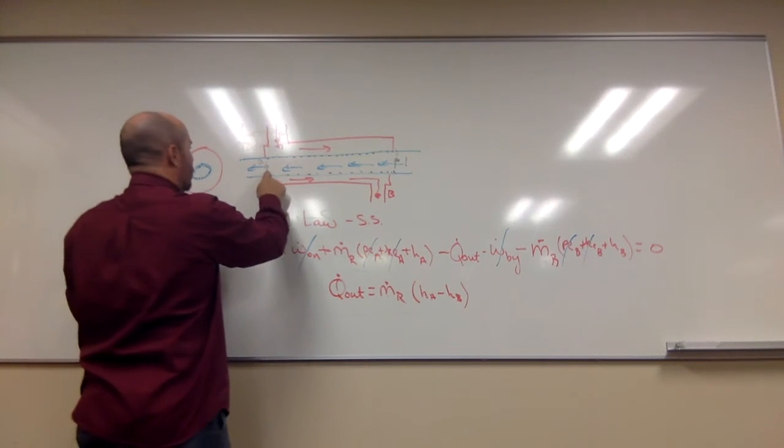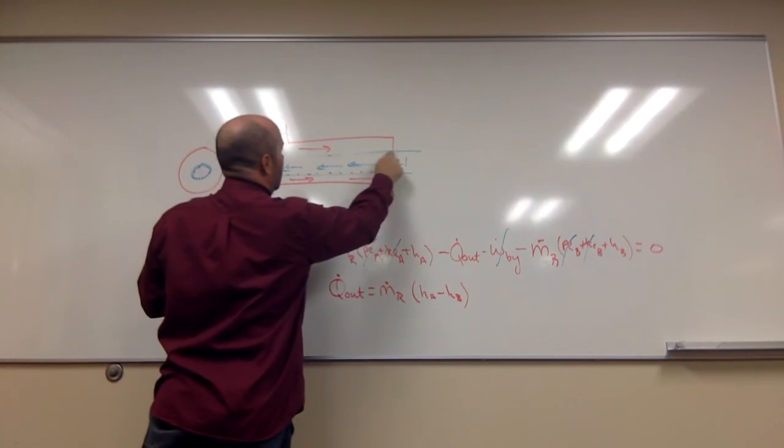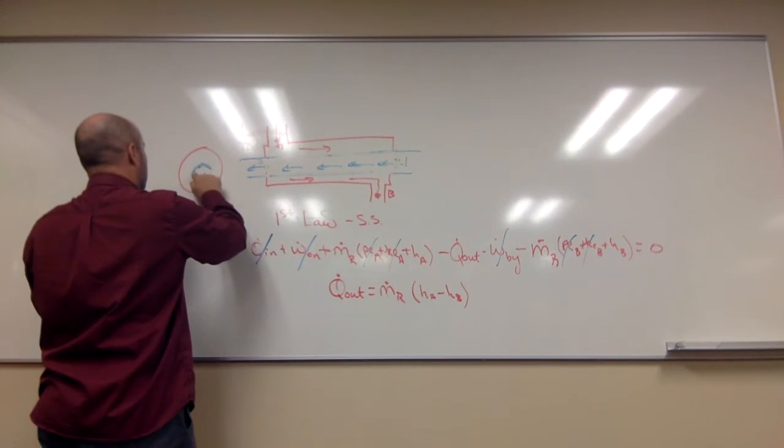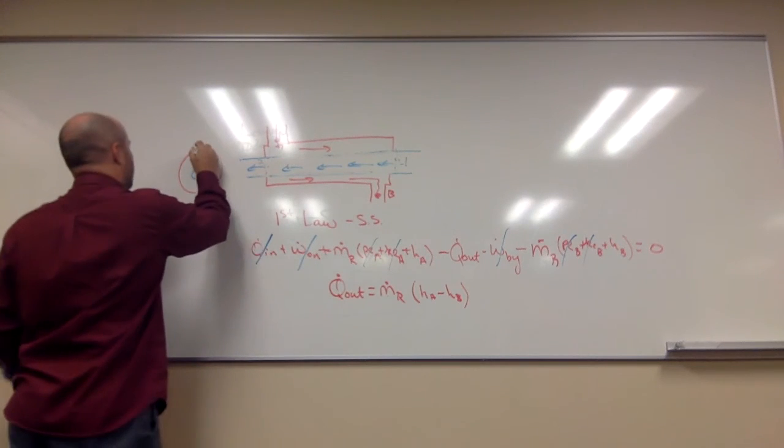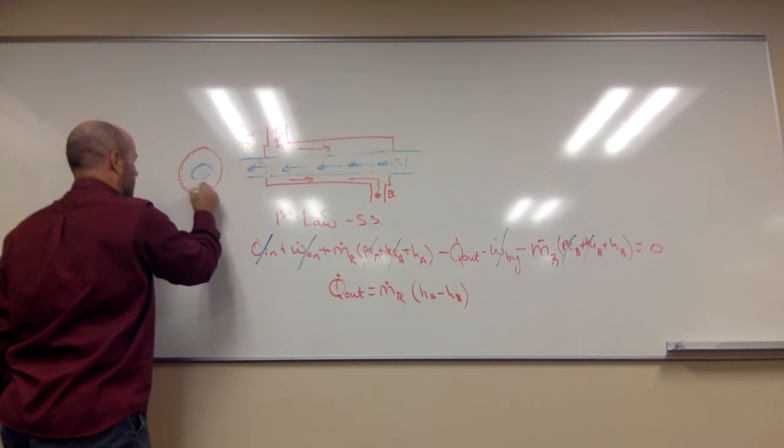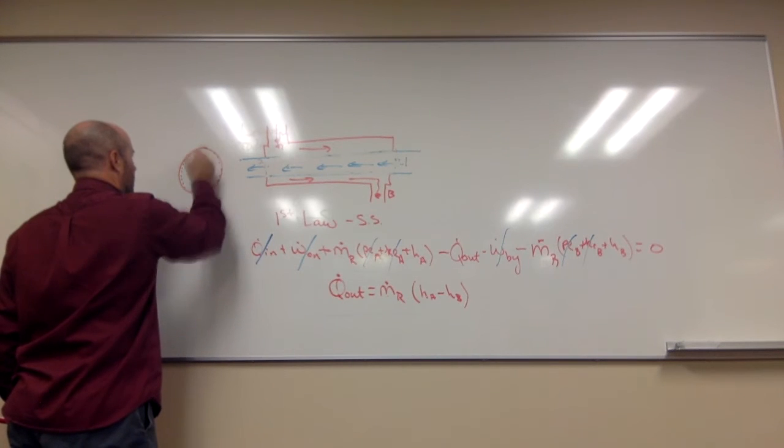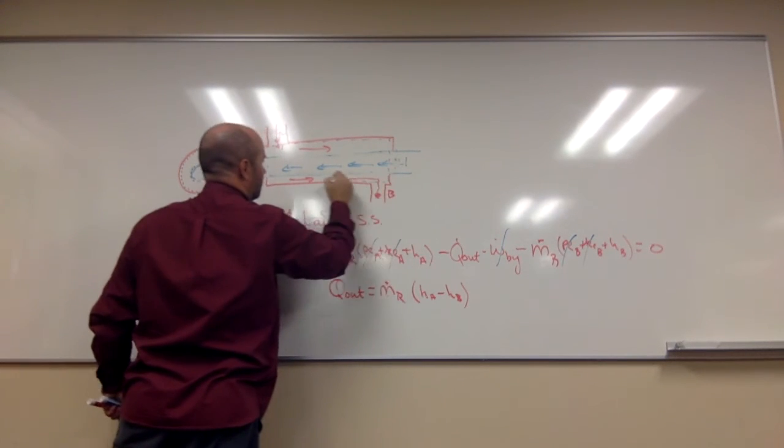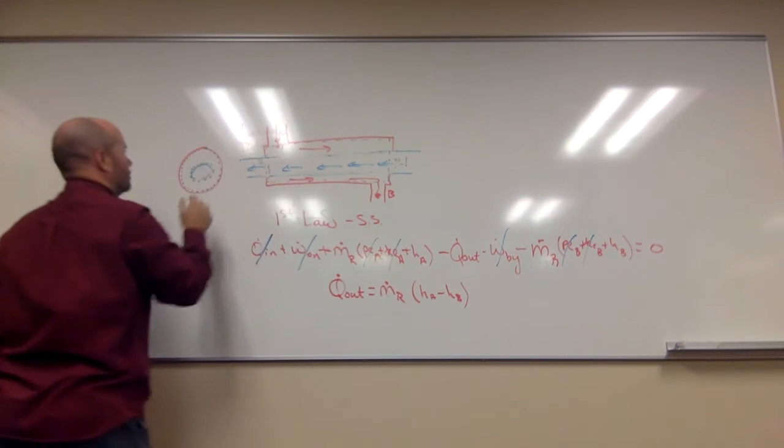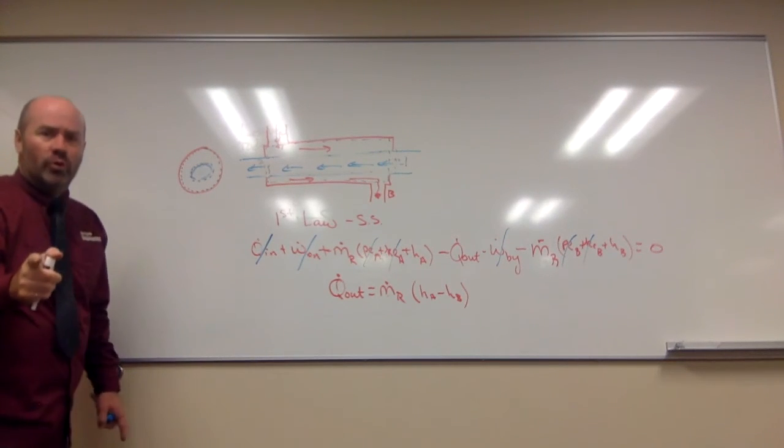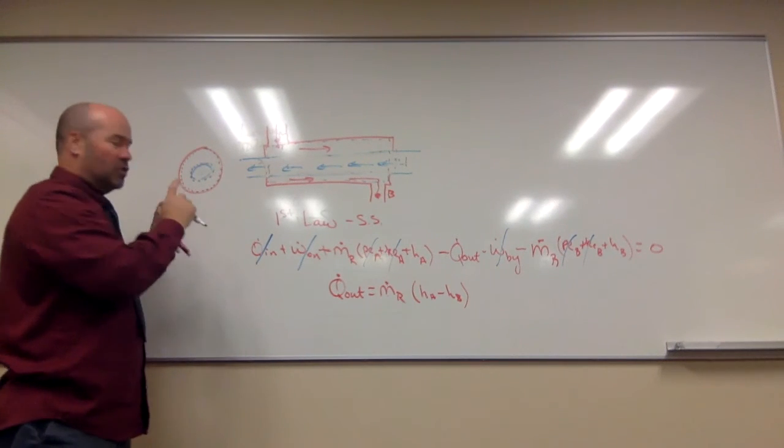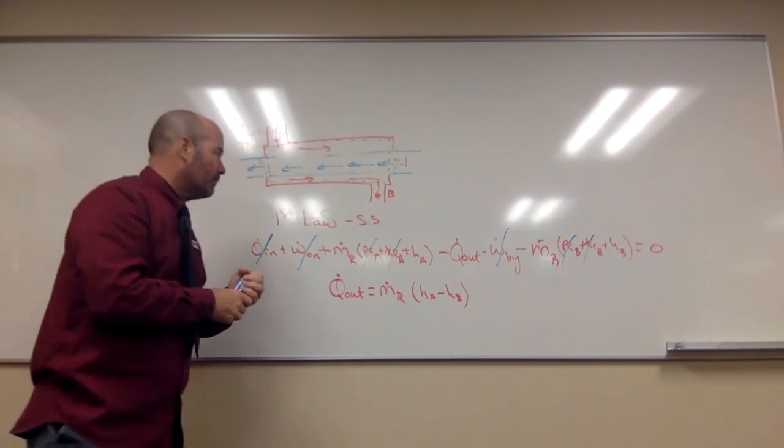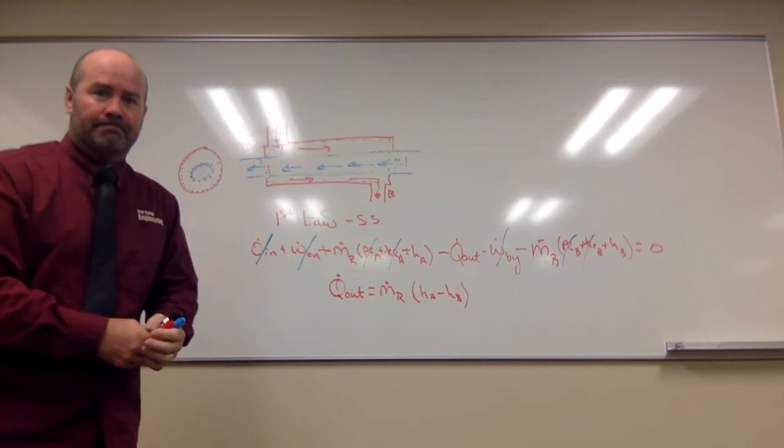Now, what I didn't do there is I didn't redraw my boundary, and I should have, for that example, the red fluid. There's everything in here. So, redrew the boundary, created the new system, just the red fluid, wrote the equation for the red fluid. All right. One more.